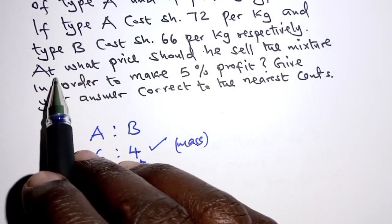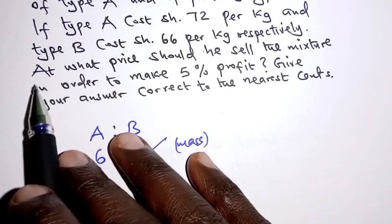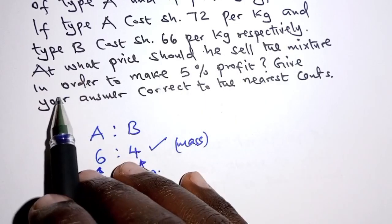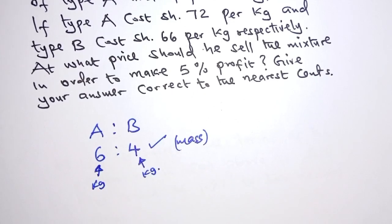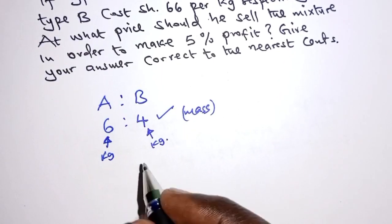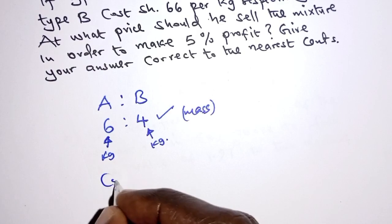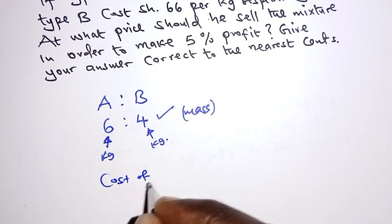Remember, the question requires us to determine the price that the mixture should be sold at in order to make 5% profit. We need to first determine the cost price of the mixture.